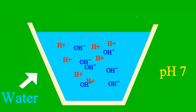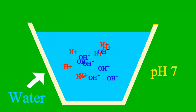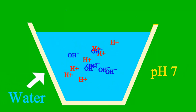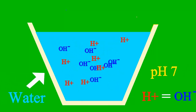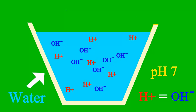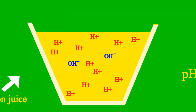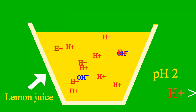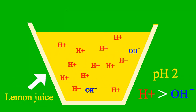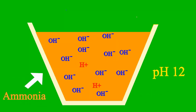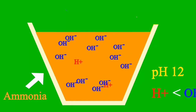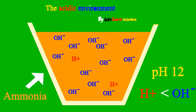When the pH is 7, it's a case where the sample is neither acid nor base. But less than 7, it's an acid; more than 7, it's a base all the way.